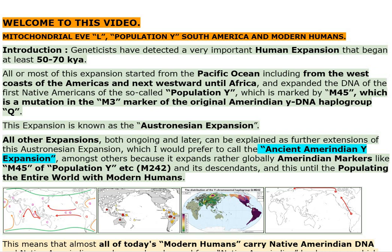Welcome to this video: Mitochondrial Eval, Population — Why South America and Modern Humans Introduction. Geneticists have detected a very important human expansion that began at least 50 to 70 kya. All or most of this expansion started from the Pacific Ocean, including from the west coasts of the Americas, moving westward until Africa, and expanded the DNA of the first Native Americans of the so-called Population Y, which is marked by M45 — a mutation in the M3 marker of the original Amerindian Y-DNA haplogroup Q. This expansion is known as the Austronesian Expansion.